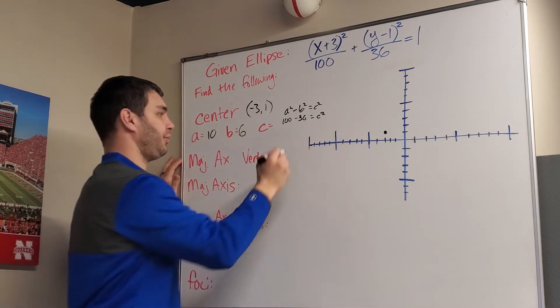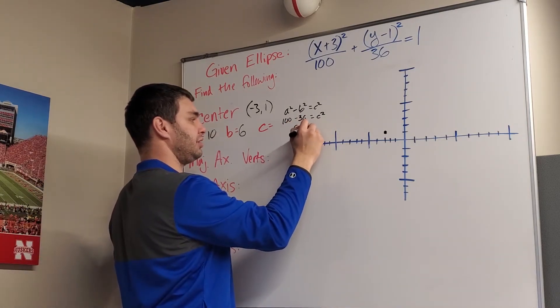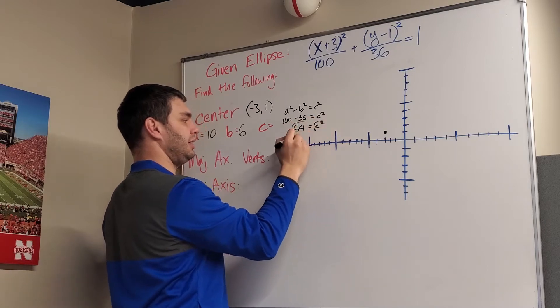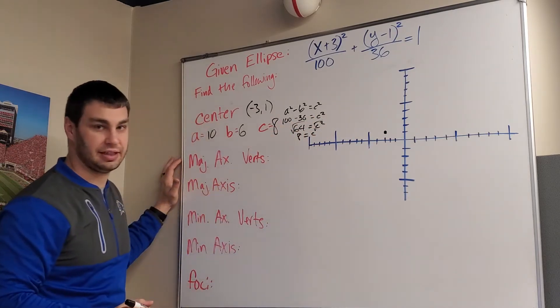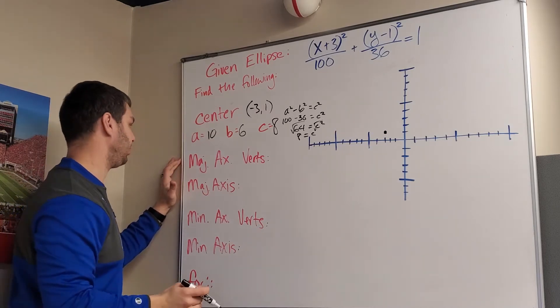100 minus 36 is 64, and of course, the square root of 64 is 8. So 8 is my c. That's going to be important later when we find our foci.